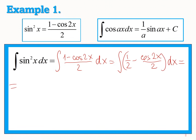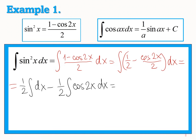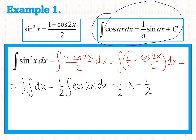Now we can write our integrand as the difference of two fractions: 1/2 minus cos2x/2 dx. According to the property of integration, we can write this as (1/2)∫dx minus (1/2)∫cos2x dx. The first integral gives x, so we have (1/2)x minus (1/2). Using the formula with A equals 2, we get (1/2)sin2x plus C.